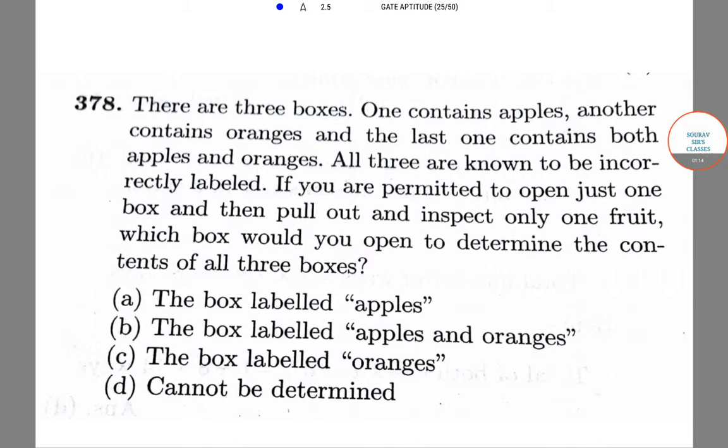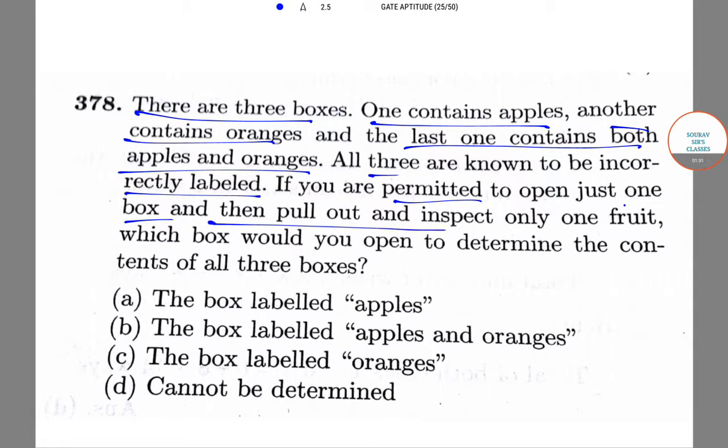The next question is, there are three boxes. One contains apples, another contains oranges, and the last one contains both apples and oranges. All three are known to be incorrectly labeled. If you are permitted to open just one box and then pull out and inspect only one fruit, which box would you open to determine the contents of all three boxes?